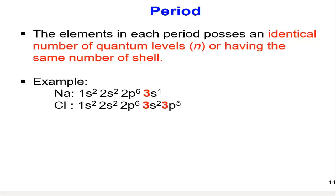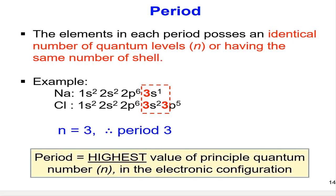For example, sodium and chlorine atom has the same number of shells, which is 3. Therefore, both sodium and chlorine are located in period 3. You can also conclude that the period can be determined by the highest value of the principal quantum number N in the electronic configuration.